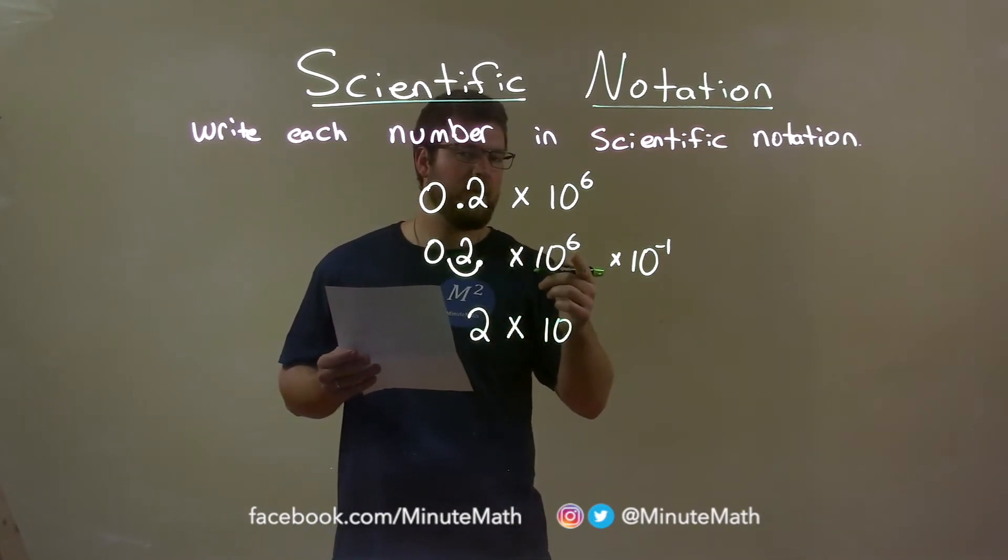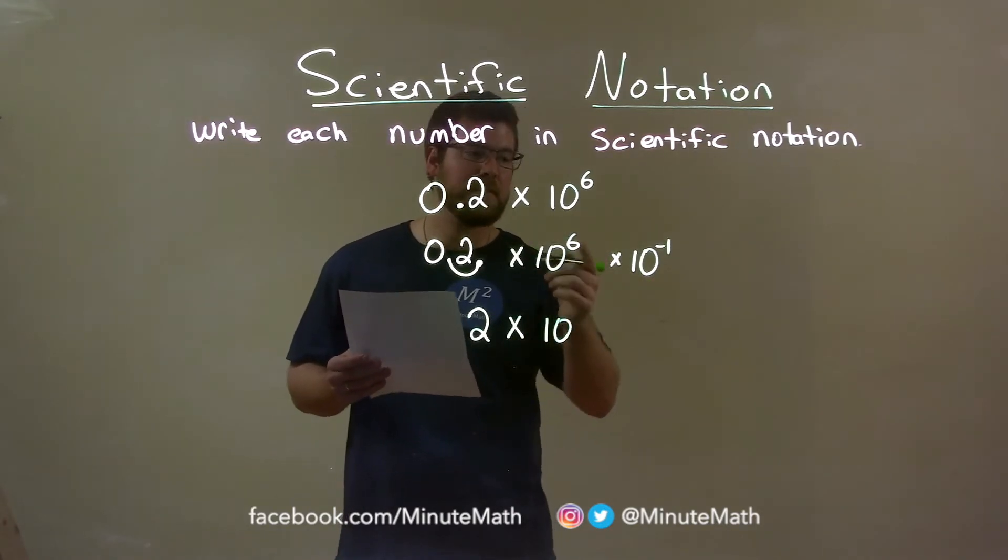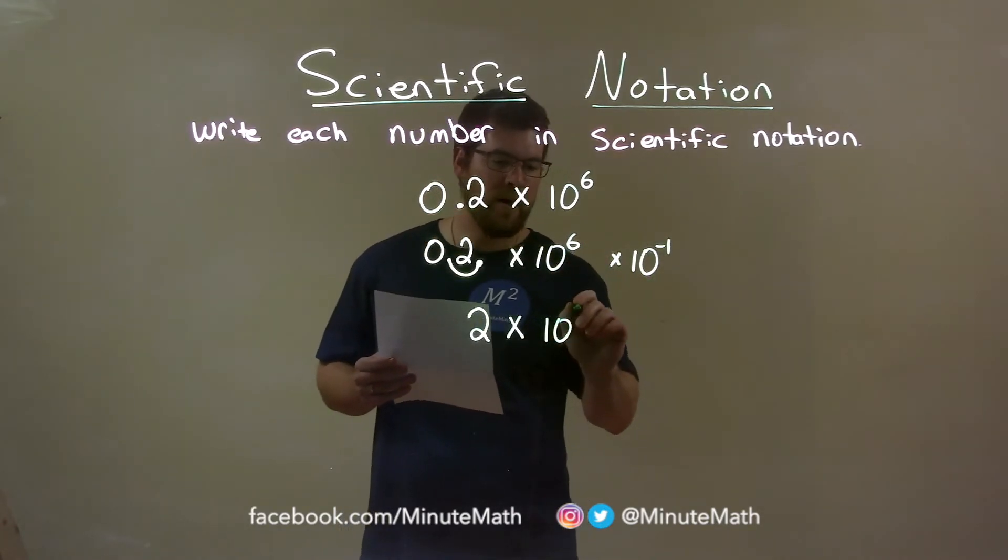when we have the same base, then multiply and we add the exponents. 6 plus a negative 1 is a 5. And so my final answer is 2 times 10 to the 5th power.